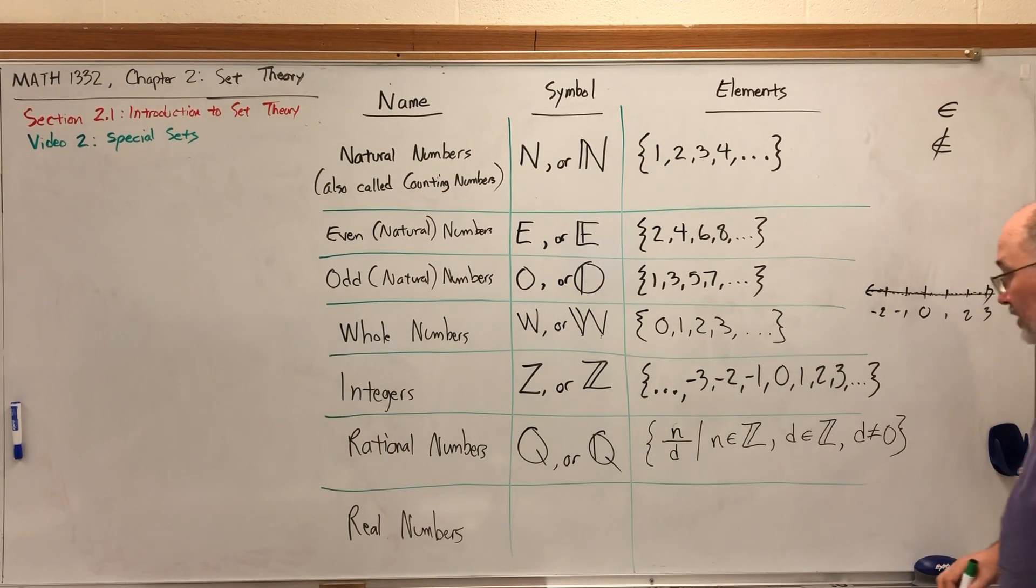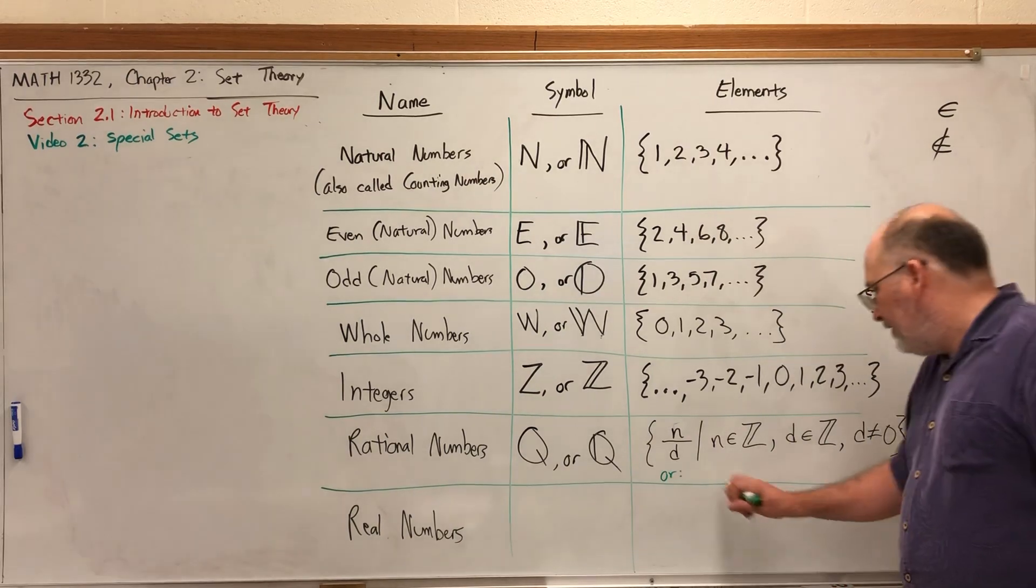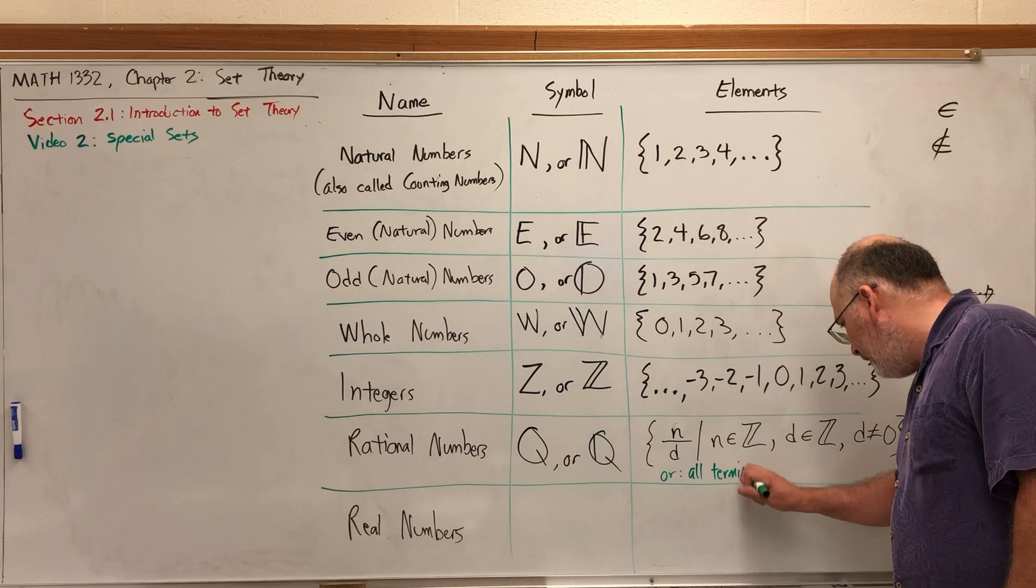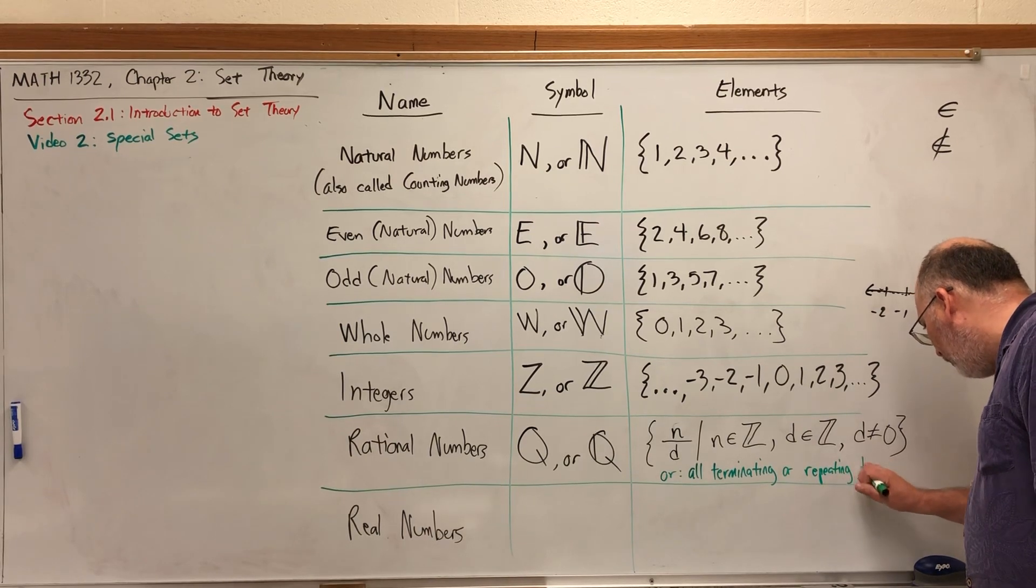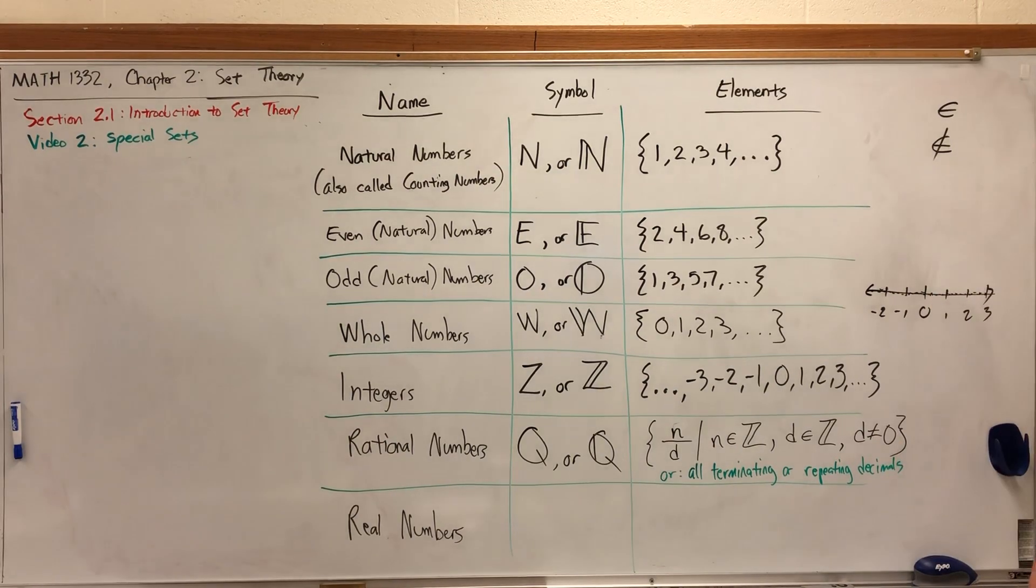The easiest way to explain them is to show you an alternative definition of the rational numbers. The rational numbers can also be thought of as all terminating or repeating decimals. A rational number is a fraction, which is just a division problem. If we did 16 divided by 5, we get 3.2, which terminates. 3.2 is a rational number because it's the ratio of 16 over 5.